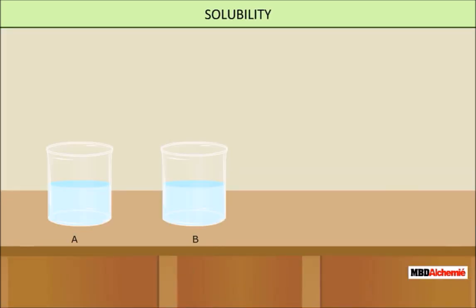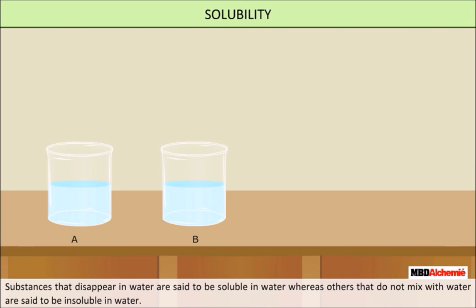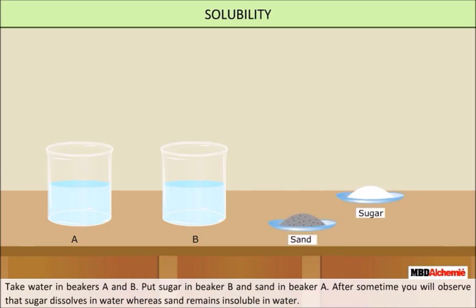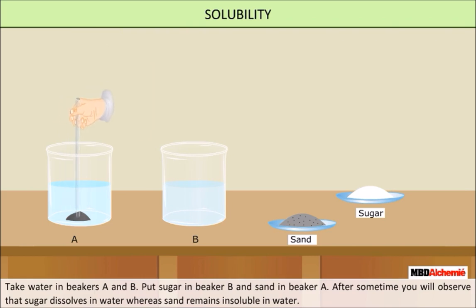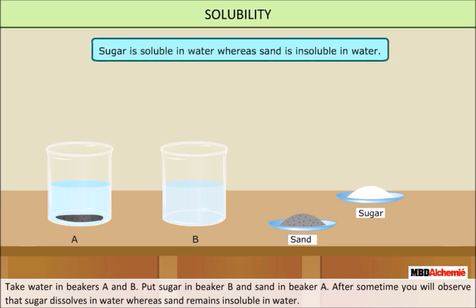Solubility of materials in water. Substances that disappear in water are said to be soluble in water, whereas others that do not mix with water are said to be insoluble in water. The solubility of sand and sugar in water is shown in the animation. Take water in beakers A and B. Put sugar in beaker B and sand in beaker A. Dissolve them with the help of a glass rod. After some time, you may observe that the sugar in beaker B has disappeared whereas the sand in beaker A has not. So, sugar is soluble in water whereas sand is insoluble in water.